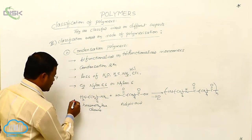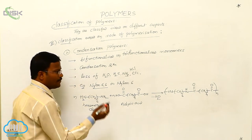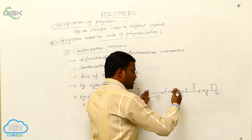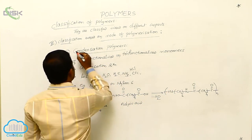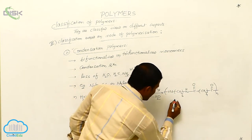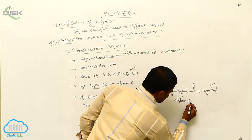That means N number of hexamethylenediamines when reacts with N number of adipic acids, continuously the chain formation takes place. The resulting polymer comes under condensation polymer. This is nothing but nylon 6-6.